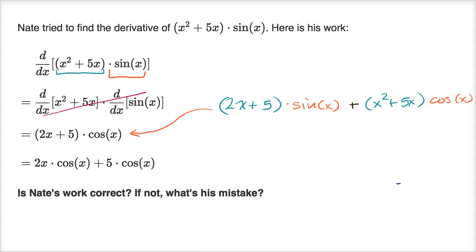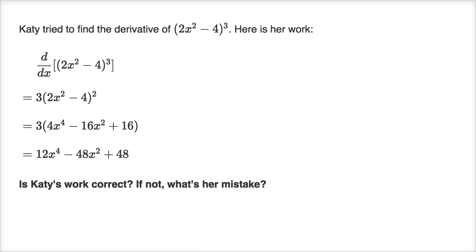Let's do more examples. It says Katie tried to find the derivative of two x squared minus four, all of that to the third power. Here is her work. Is Katie's work correct? If not, what is her mistake? So once again, pause the video and see if you can figure it out. Now let's inspect Katie's work. She's taking the derivative of this, and over here it looks like she's taking the derivative of the entire expression with respect to the inner expression, and that is close to applying the chain rule properly, but it's not applying the chain rule properly.